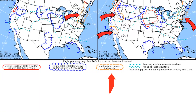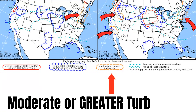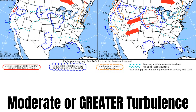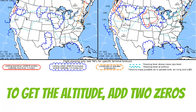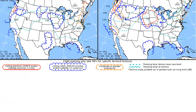Orange dashed lines indicate moderate or greater turbulence in those areas. There's a little mountain symbol that indicates what altitude you can expect the turbulence. Just like on most aviation weather charts, to get the altitude you simply add two zeros. So here, the turbulence starts at 24,000 feet and goes down to 20,000 feet. A lot of times they'll draw an arrow to clarify which area the altitude symbols belong to.